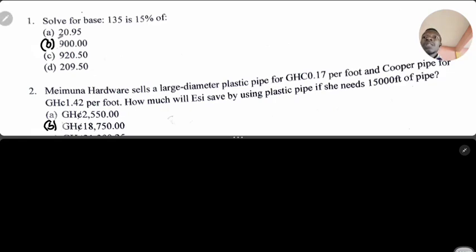So that should be 15 percent of a certain number that will give us 135. Using the equation approach, it becomes 135 equals 15 percent of a certain number that we don't know. Let's represent that as x. Once you're able to represent that, then you solve for x.